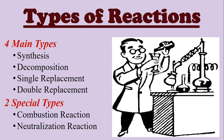For types of reactions, there are four main types: synthesis, decomposition, single replacement, and double replacement. Those are the ones we're really going to focus on classifying our reactions as today. But there are two special types — combustion reaction, which we're going to talk about today, and neutralization reaction, which we're going to talk about in a different video when we cover the information needed for that type of reaction.